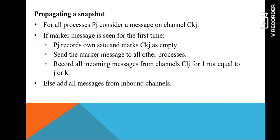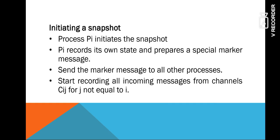We have three steps: initiating the snapshot, propagating the snapshot, and terminating the snapshot. In initiating the snapshot, process Pi initiates the snapshot algorithm — it records its own state and prepares a special marker message. This marker message is sent to all other processes, and it starts recording all incoming messages from channel C_ij, for j not equal to i. That is, for all incoming channels, the messages are recorded.